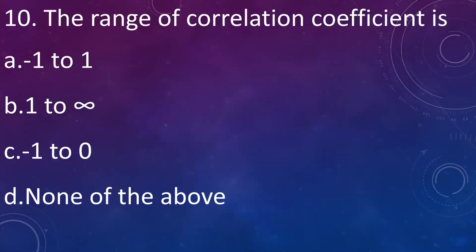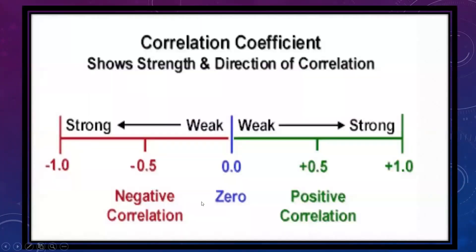The range of correlation coefficient is: A: minus 1 to plus 1, B: 1 to infinity, C: minus 1 to 0, D: none of the above. Answer is minus 1 to 1. The correlation coefficient shows the strength and direction of correlation. If it is minus 1, it is called strong negative correlation, whereas when it is plus 1 it is positive correlation. Moving from 0 to 1, correlation moves from weak to strong — the closer the value is to 1, the stronger the correlation.